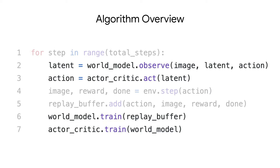At a high level, DreamerV2 consists of the following steps. At every time step, the world model integrates the next input image into the compact representation of the agent. An actor-critic algorithm receives this representation to produce an action. The action is sent to the environment and the experience is stored in the agent's dataset. Then the world model is trained from this dataset of past experience, and the actor-critic behavior is trained from trajectories predicted using the world model in its compact representation space.